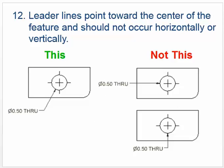Leader lines should point towards the center of the feature and should not occur horizontally or vertically. Here's a good example, and this is a bad example: a horizontal leader line kind of looks like an object line. It can be confusing — is this part of the part or not? It's pretty obvious here, but it can still cause confusion.